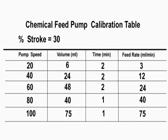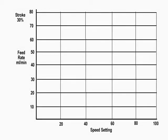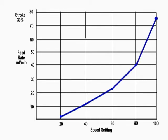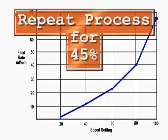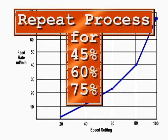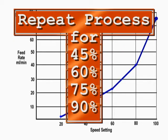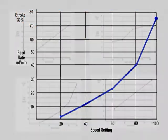The results should be graphed, as shown in the example. By drawing a line through the points, the operator can illustrate the delivery characteristics of the pump. The process should be repeated for stroke settings of 45, 60, 75, and 90 percent. The operator can then compare the various results and choose the most linear curve for normal pump operation.